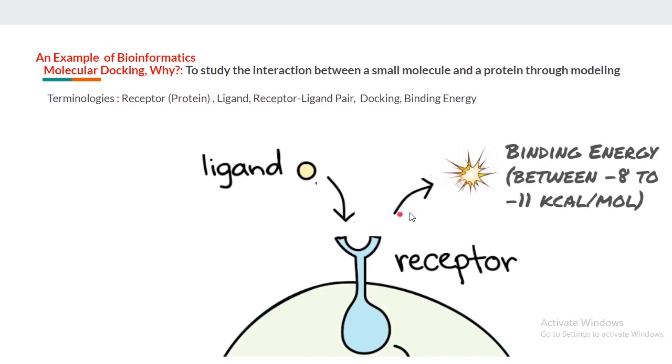Once the ligand binds to the receptor, you would see energy release. This release of energy when ligand binds to the receptor is known as binding energy, which should be between minus 8 kilocalories to minus 11 kilocalories per mole. This is the range considered to be a good range for a ligand and receptor to bind.